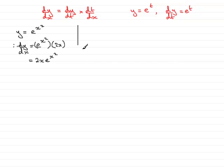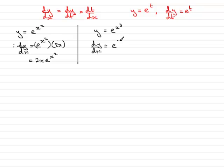Let's try another. Suppose y equals e to the x cubed. In the same way, dy by dx equals dy by dt where t is x cubed, so y equals e to the t, which is e to the x cubed. Multiplying by the differential of t with respect to x gives 3x squared. Cleaning that up: 3x squared e to the x cubed.